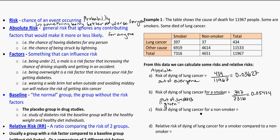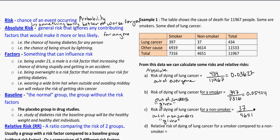What is the risk of dying of lung cancer for a non-smoker? Here we are out of the non-smokers. Given that they are a non-smoker, that's 4,651 of them, and 37 of those died of lung cancer. If we put this into our calculator, you're going to get 0.007955.